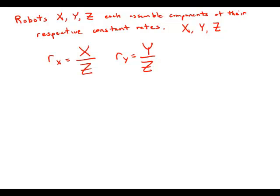Then is robot Z's constant rate the greatest of the three? So is Z greater than X or Y?